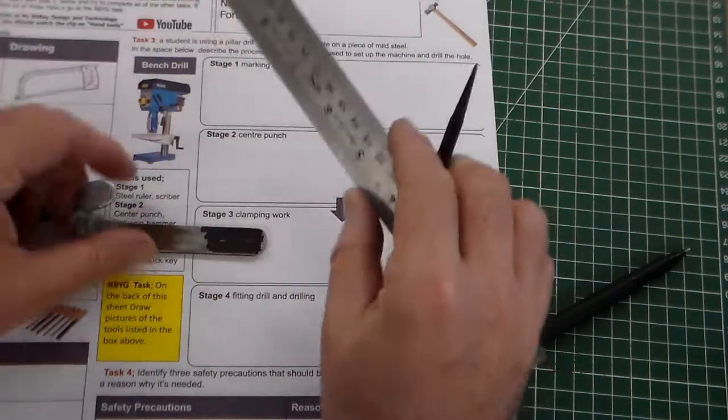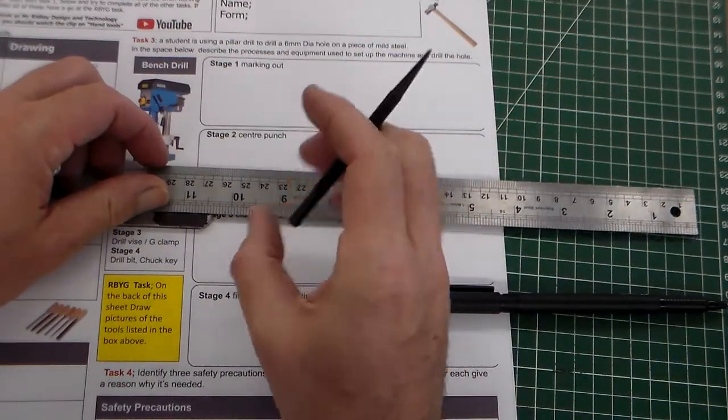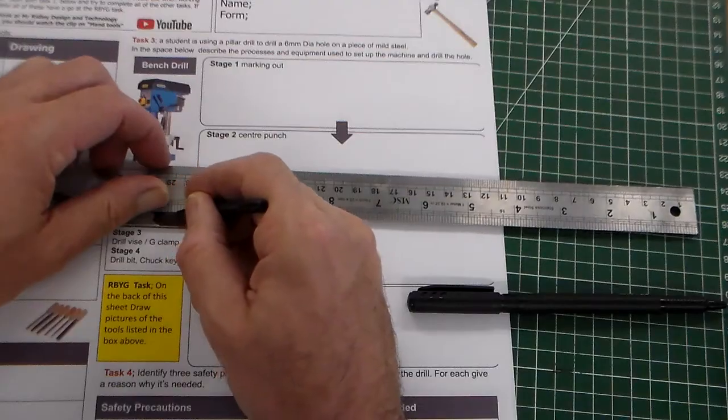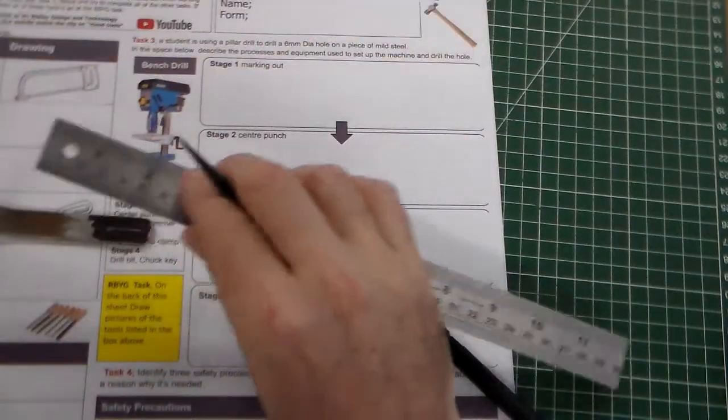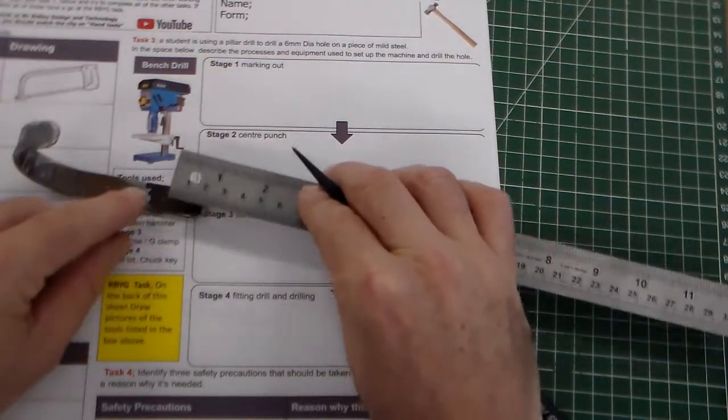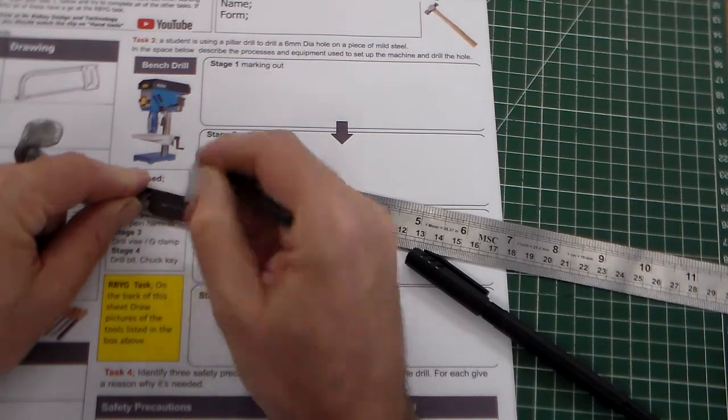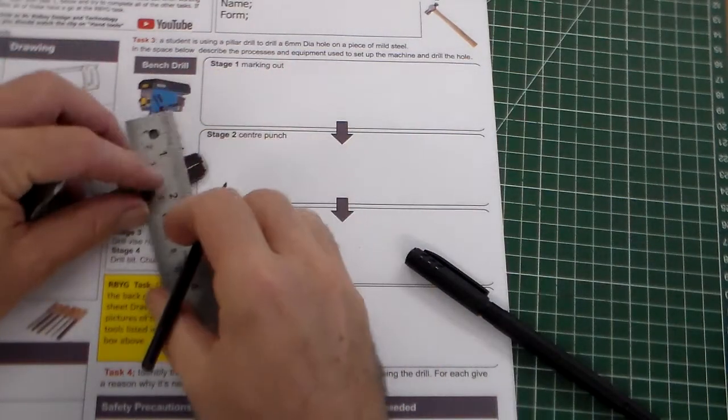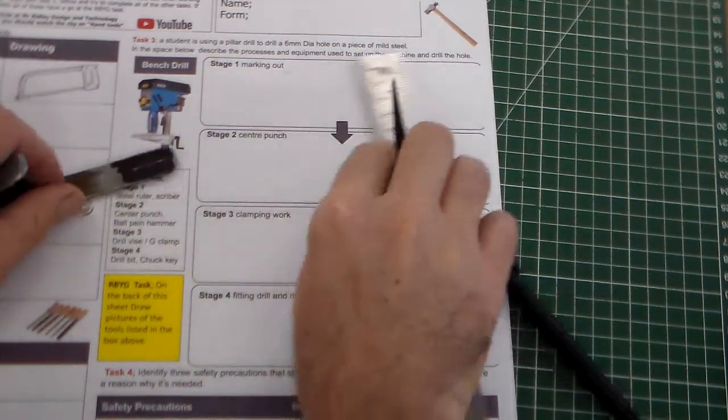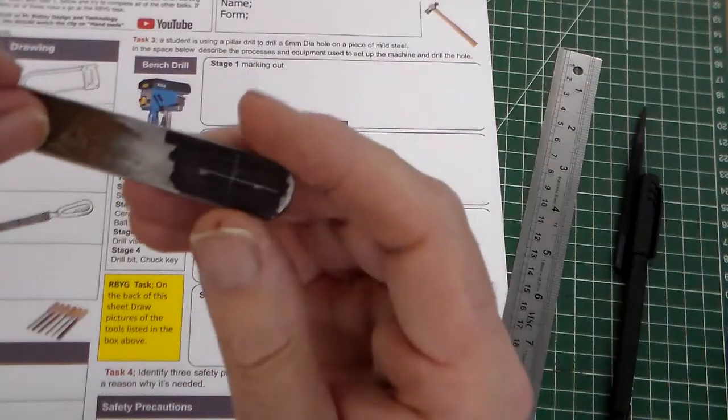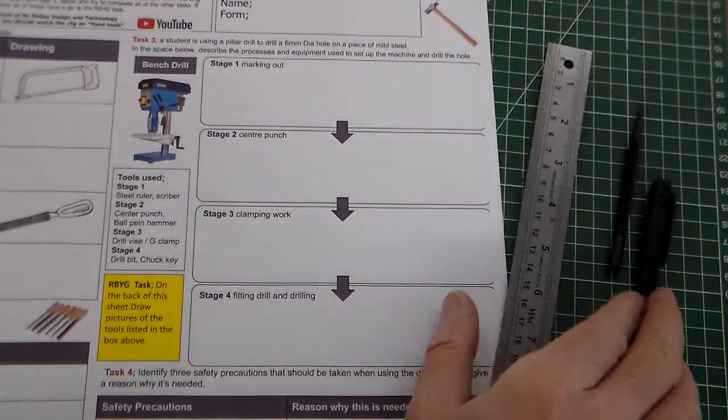And we'd use the steel ruler to just mark. We could use other marking tools, but these would be the most simple. And we'd just mark and scribe with the tool, measure where we'd want to put the marking. And we can see there that the scriber and the ruler, and we've marked a small cross.